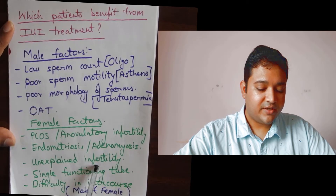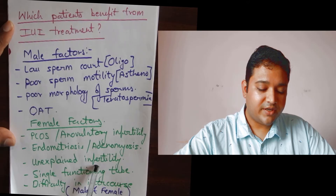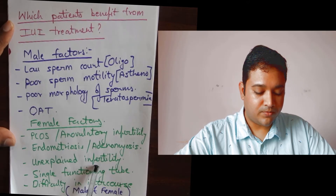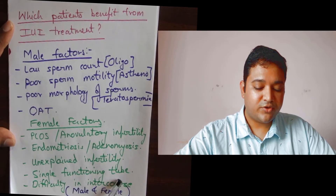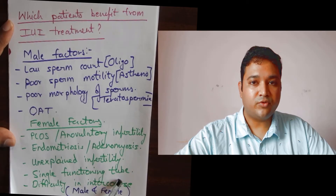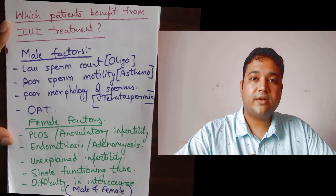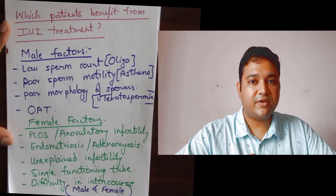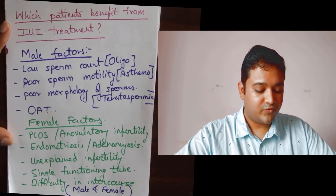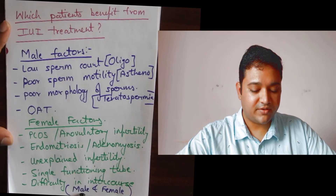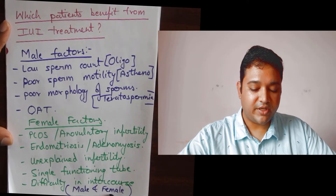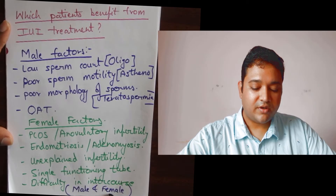Unexplained infertility means that the reason for infertility is unexplained or unknown. Women with a single functioning fallopian tube — where the other tube is diseased, blocked, or surgically removed — can also benefit. IUI treatment can often be done in couples having difficulty with intercourse, for example males having an abnormal shape and size of the penis.